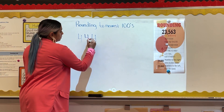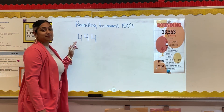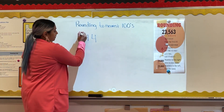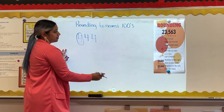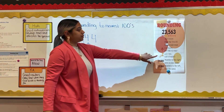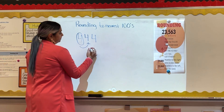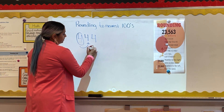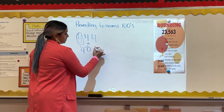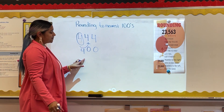Let's now try rounding to the hundreds. Our number is 444. My first step is to find the value — there is a four in my hundreds place, so that is what I'm going to circle. Then I look next door and I see a four, so four or less, we let it rest. Everything to the right, zero is your name. So my four remains the same in the hundreds place, and everything to the right becomes a zero.